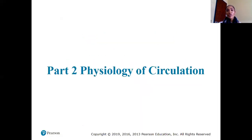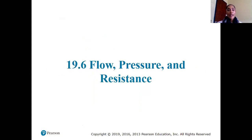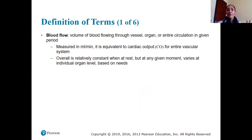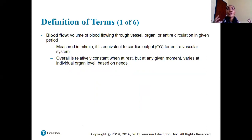This chapter is going to talk about the physiology of how blood is going to circulate through our blood vessels. We'll start off by talking about flow, pressure, and resistance — some definitions of terms we want to commit to memory. Blood flow is the volume of blood flowing through a vessel, an organ, or an entire circulation at a given period.